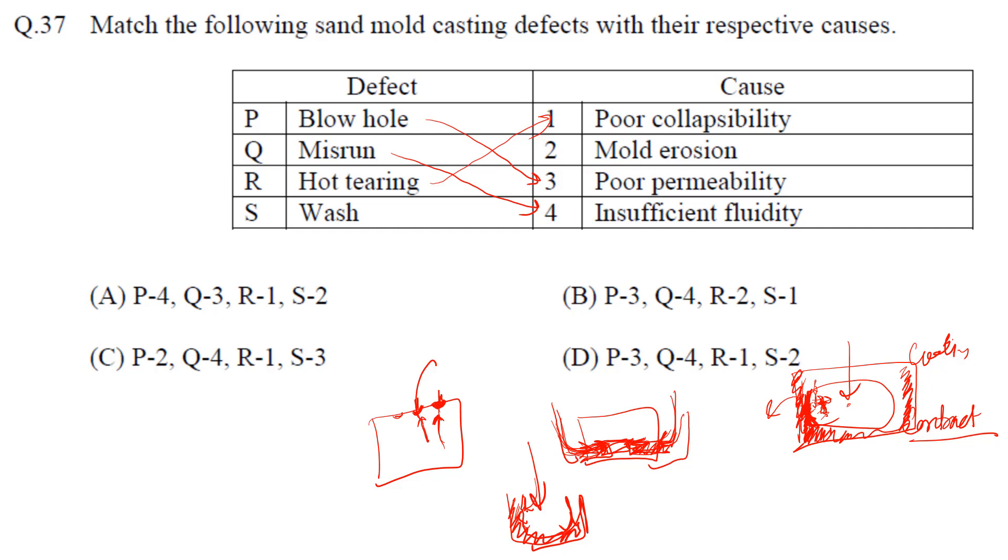So that basically creates wash, means washing away of the mold surface. That is nothing but the mold erosion. So P matches with 3, Q matches with 4, and R matches with 1, and S matches with 2. So option D is your correct answer. Okay guys, so thank you all.